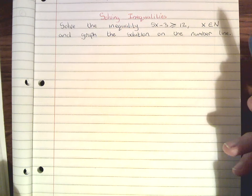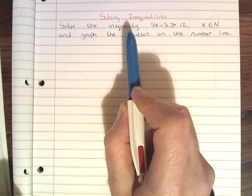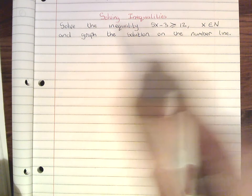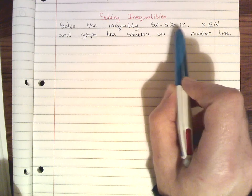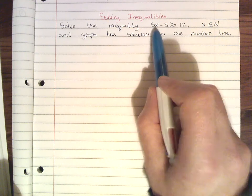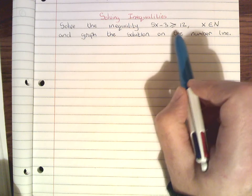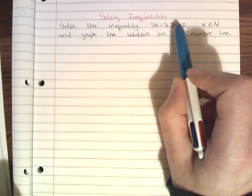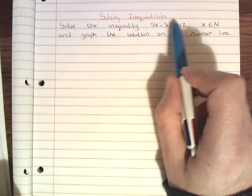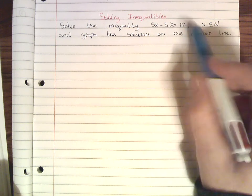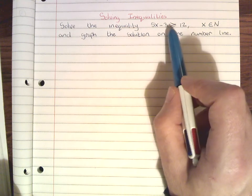In this lesson we're going to look at solving inequalities. We know it's an inequality because we have an inequality sign here — instead of an equal sign like in an equation, we have this inequality sign. The question says: solve the inequality 5x minus 3...